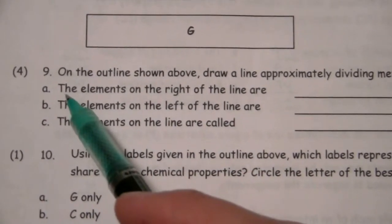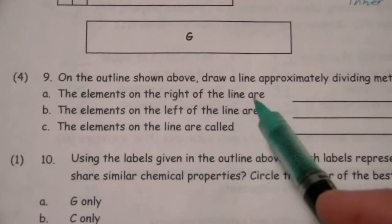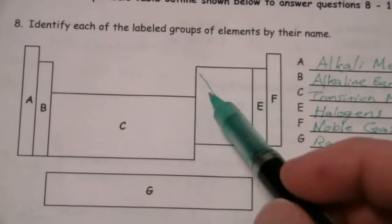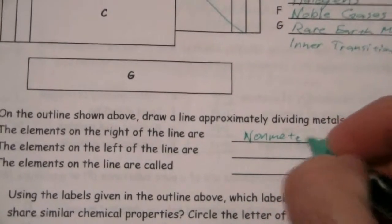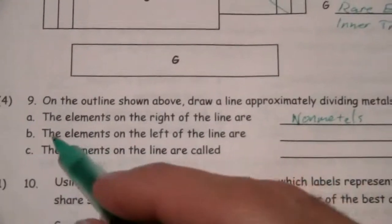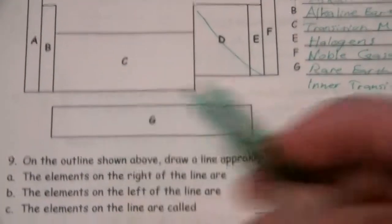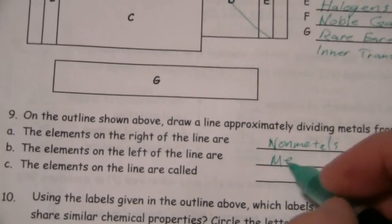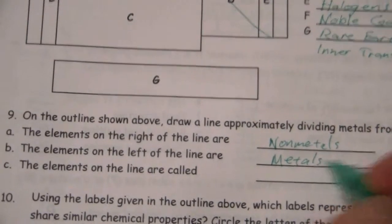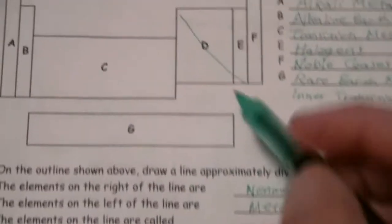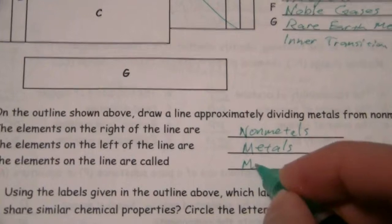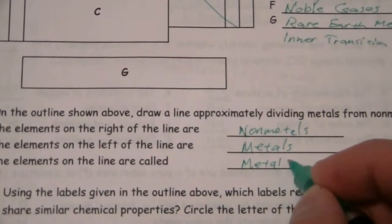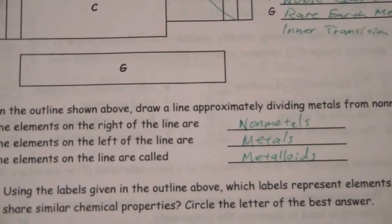And then we have a few questions here. The elements on the right of the line are, well, the right of the line, those are the non-metals. The elements on the left of the line, those are the metals. And the elements on the line, those are the metalloids.